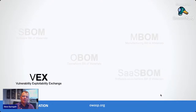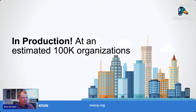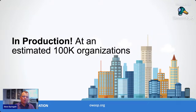Finally, there's the Vulnerability Exploitability eXchange, or VEX. Not all third-party components are going to be vulnerable or exploitable. Being able to communicate that so consumers of software can make better risk-based decisions is crucial to the success of SBOM. CycloneDX is an OWASP project, has been in use for a while, with its primary objective being cybersecurity use cases, and it's in production at an estimated 100,000 organizations.